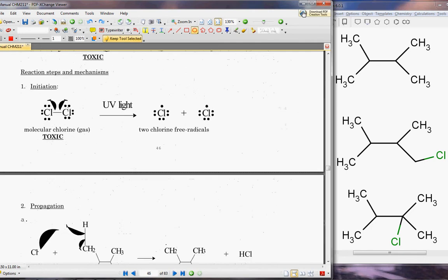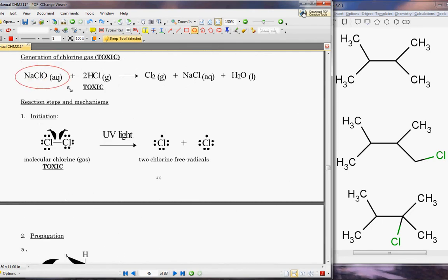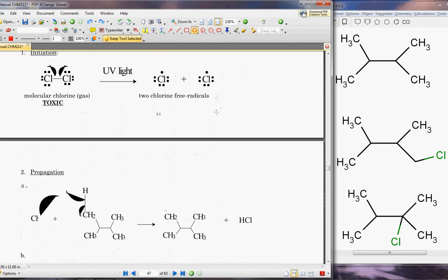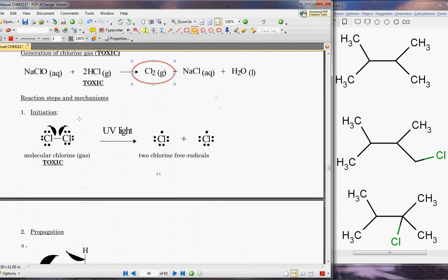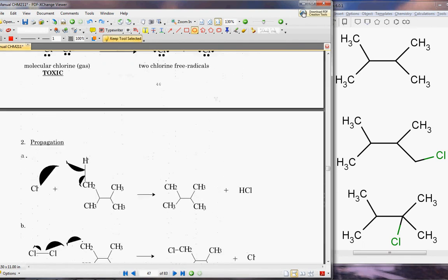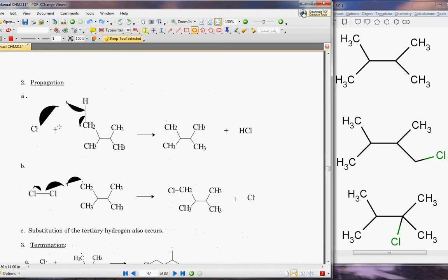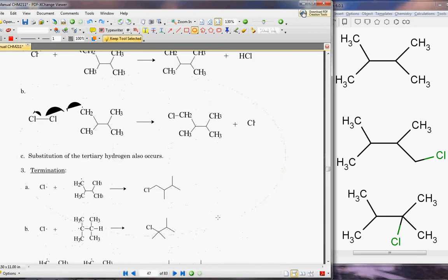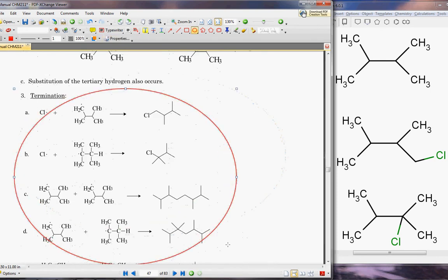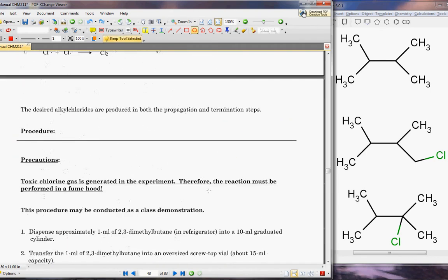This week we're going to use bleach, which is written here as sodium hypochlorite, and we're going to use hydrochloric acid. This is going to produce the toxic chlorine gas and salt and water. After we form the chlorine gas, we're going to use UV light to start our initiation step. Then our propagation step is shown, and then our termination step is also shown.